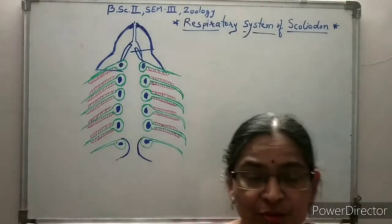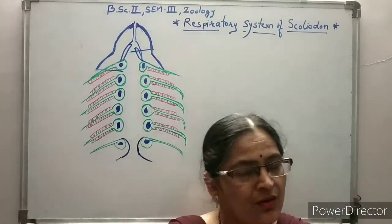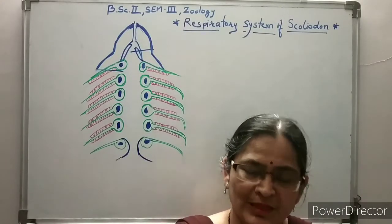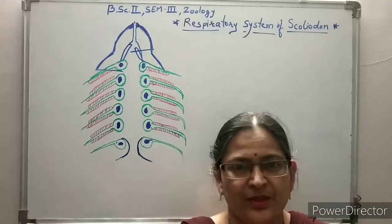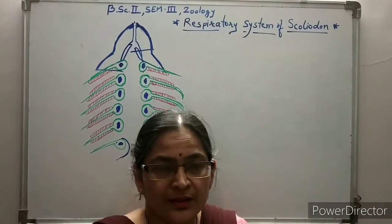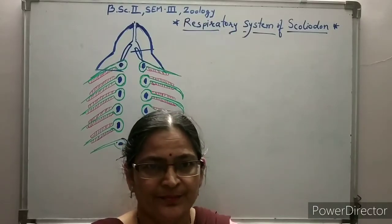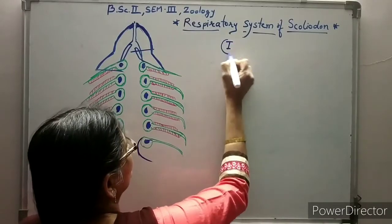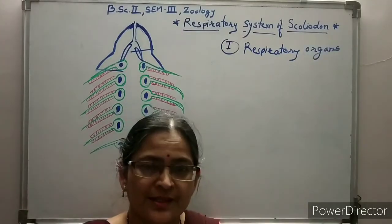Now, as you know, the scoliodon is an aquatic animal. It lives in sea water. Obviously, it utilizes the oxygen which is dissolved in water. Means, the scoliodon or dogfish shows aquatic mode of respiration. We have to study the respiratory system of scoliodon under three heads. So, let us see one by one.